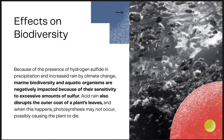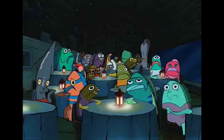First and foremost, the sulfur cycle's effects on biodiversity. According to a number of sources, it is found that because of the presence of hydrogen sulfide in precipitation and increased rain by climate change, marine biodiversity and aquatic organisms are negatively impacted because of their sensitivity to excessive amounts of sulfur.